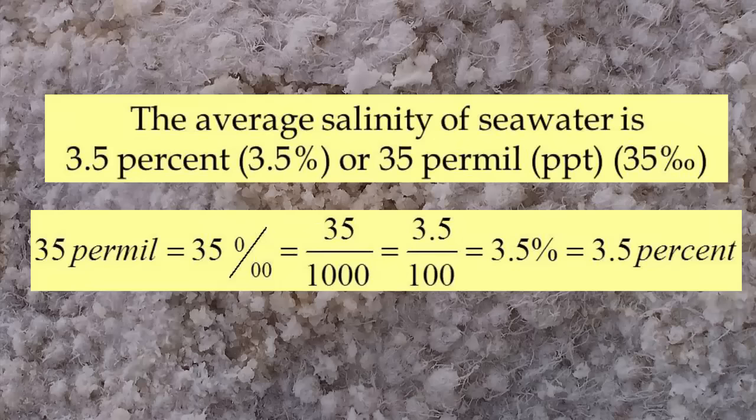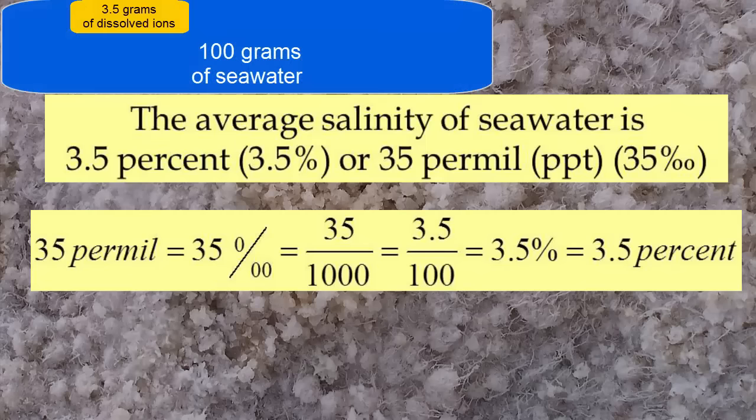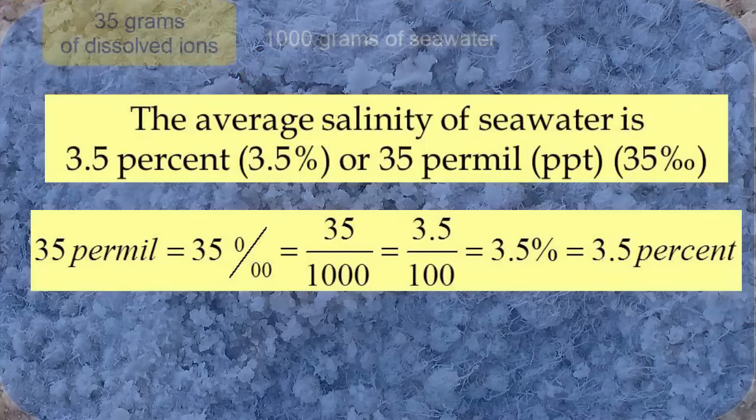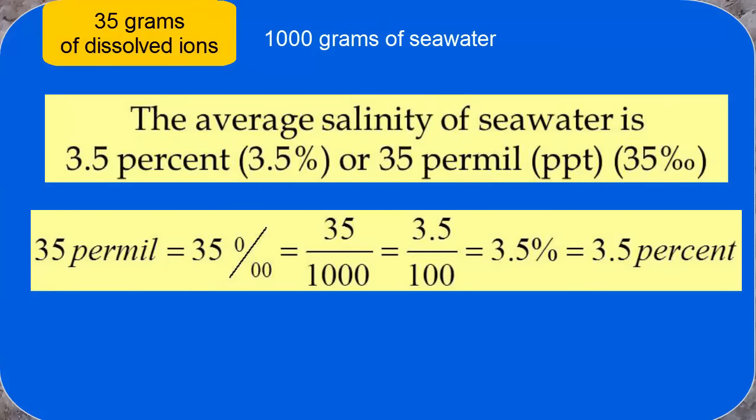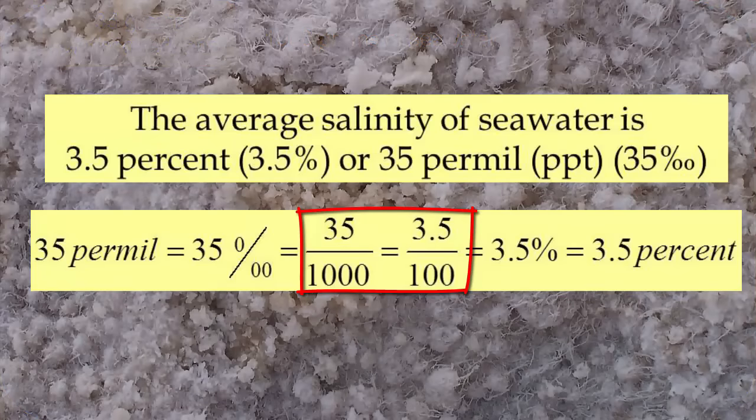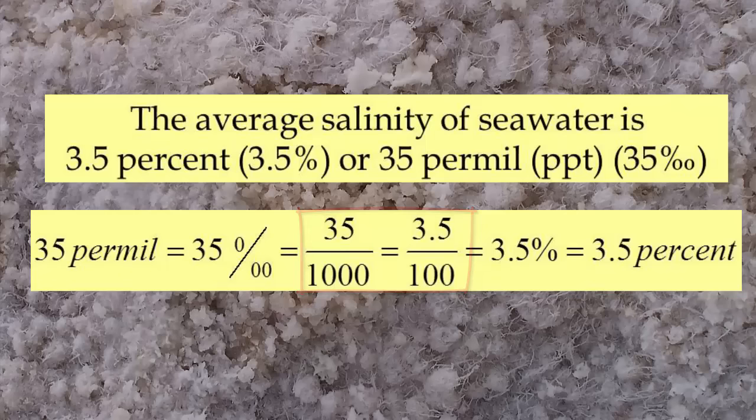Let's see what that looks like for the average salinity of seawater, which is 3.5 grams of dissolved ions per 100 grams of seawater, 3.5 percent, which is exactly the same as saying 35 parts per thousand, or 35 per mil. So 35 per mil equals 3.5 percent. Why use one over the other? The standard for the oceans is to use per mil so we can minimize the use of decimal places.